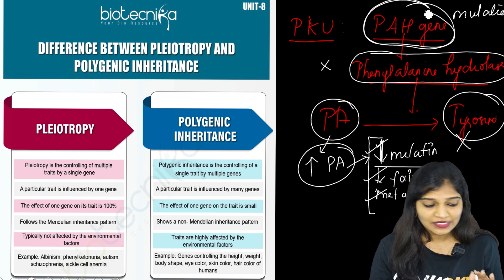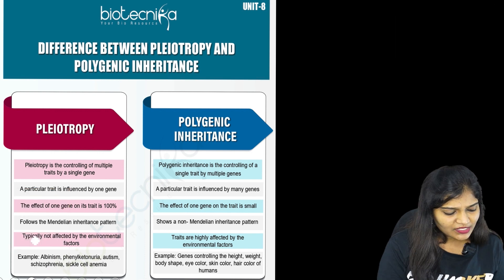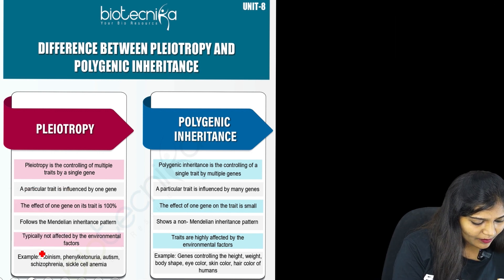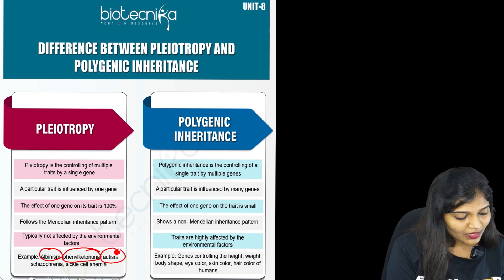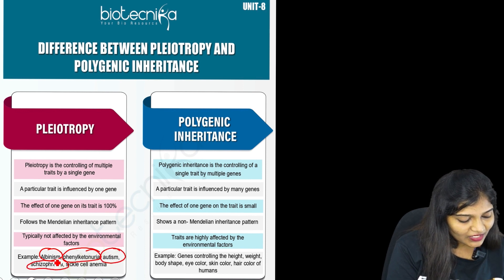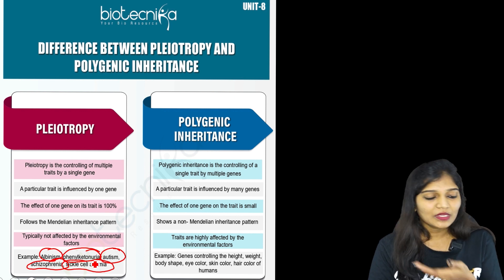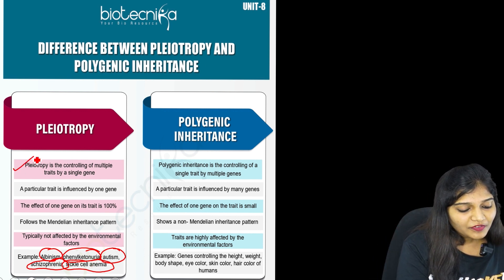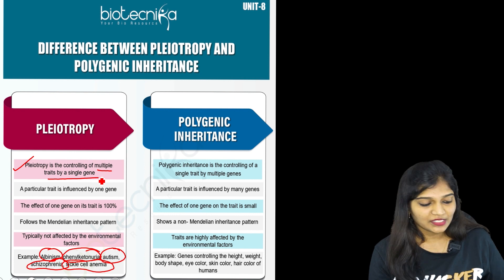Taking phenylketonuria as the example shown here: the PAH gene controls many characters — mental retardation, reduced melanin, very fair skin, hair turning whitish, and abnormal posture. You can also check albinism as an example. Other examples are phenylketonuria, autism, schizophrenia, and sickle cell anemia. So pleiotropy is the controlling of multiple traits by a single gene.